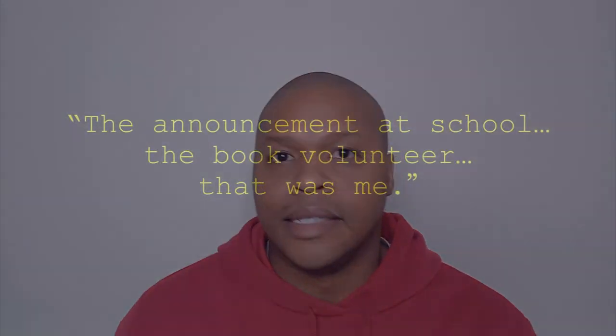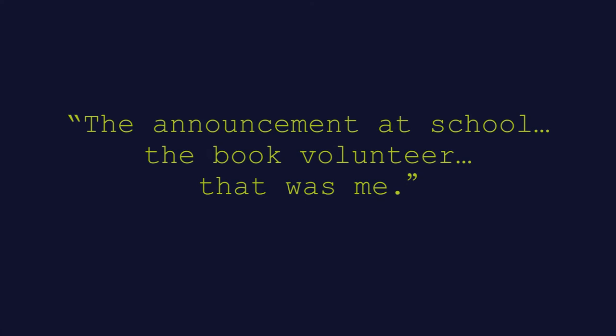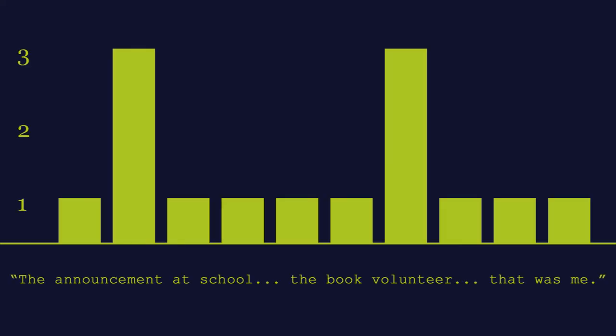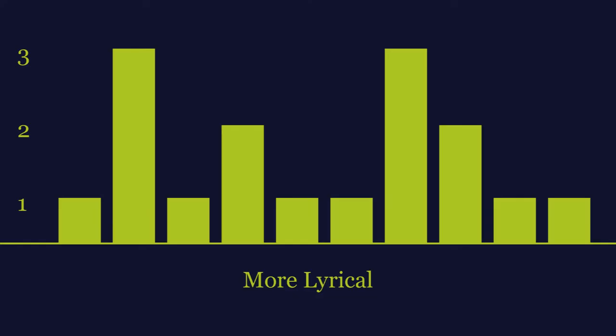So you take a line of dialogue like the announcement at school — the book volunteer, that was me. 'Announcement' and 'volunteer' are both three syllables. This is how that sentence would break down in graph form, with 'announcement' and 'volunteer' having the tallest bars. To make a sentence more lyrical and rhythmic, what you want is the peaks and valleys effect when it comes to counting syllables.